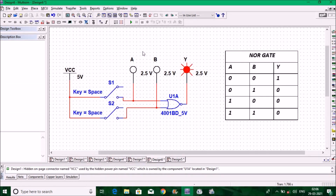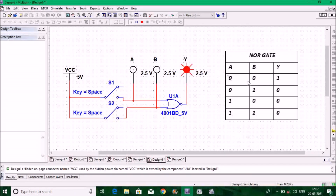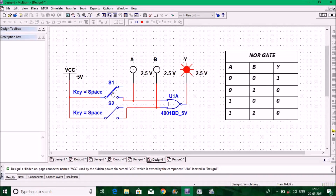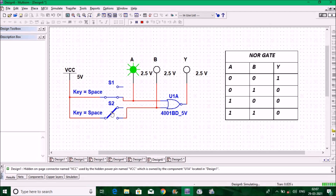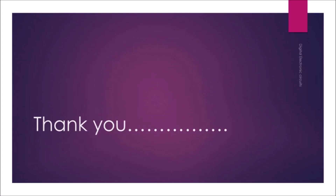Let us verify the NOR gate. This is the circuit diagram of the NOR gate. Run the program. When A is zero and B is zero, Y is one — verified from the truth table. When you change A to one and B to zero, output is zero. When both are one, output is zero. When only B is one, output is also zero. Likewise, you can verify all the gates. If you have any doubt, ask me in the comment section.